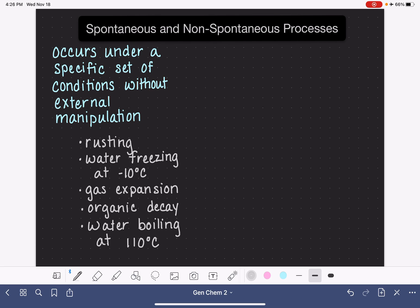Non-spontaneous processes, as you can imagine from the name, are processes that will not occur under a certain set of conditions unless we do something to make the process occur.